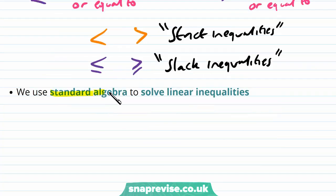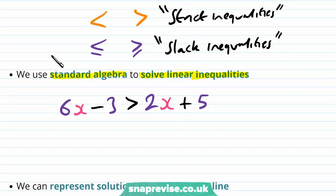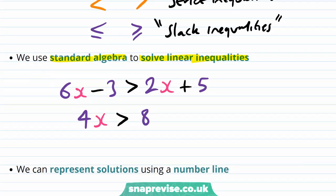We use standard algebra to solve linear inequalities. For example, if we have 6x minus 3 is strictly greater than 2x plus 5, then we put all the x terms on the left to get 4x is strictly greater than 8. Dividing by 4, we get x is strictly greater than 2. All we have done is standard algebra, as we would do with an equals sign, to solve this inequality for x.